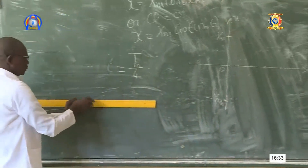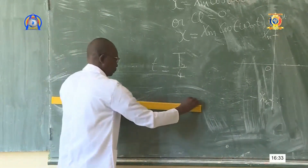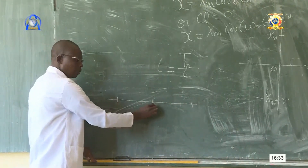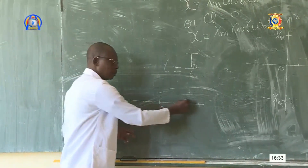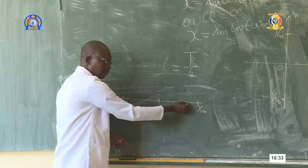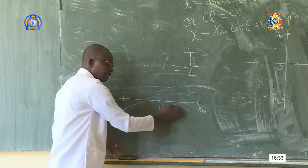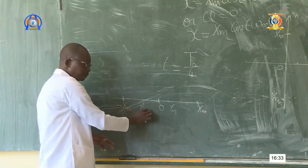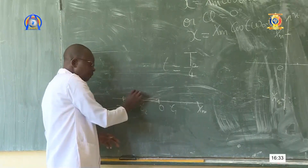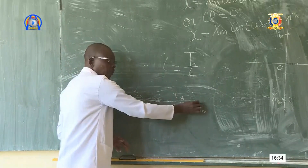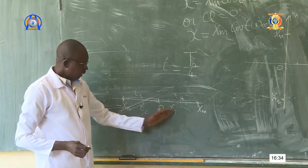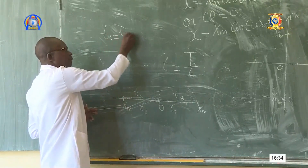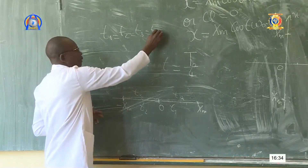Vous avez ici la position du ressort. Le ressort est au repos au point haut. On l'écarte d'une distance xm, on l'abandonne. Il revient, il passe par le point haut — sa position d'équilibre — en un temps t1. Il dépasse pour arriver à -xm au temps t2. Il repart, passe encore par l'équilibre au temps t3, et revient à la position initiale au temps t4. Ainsi t1 = t2 = t3 = t4 = t.